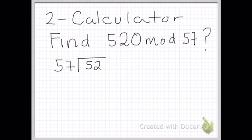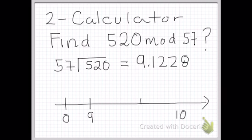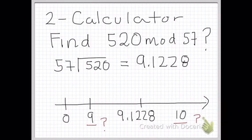So an example with the calculator: find 520 mod 57. 57 goes into 520 and we get 9.1228 on our calculator. However, 9.1228 is a decimal number and we're looking for an integer. So we look on our number line and see that 9.1228 lies between 9 and 10. So which integer do we choose?